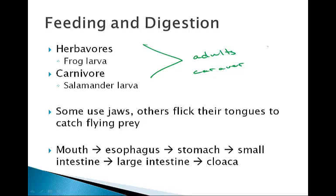Some use their jaws, like salamanders, relying mainly on their jaws for catching. Others flick their tongues to catch flying prey. These are like the frogs and the toads.